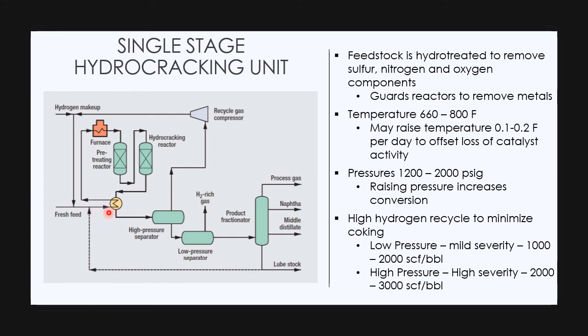Now let's look at the process flow sheet. The fresh feed is coming, it goes towards the furnace, then the pre-treating reactor, and there is our hydrocracking reactor. After that it goes to a separator, then the recycled stream comes back and mixes with the feed and the process goes on. We get naphtha, metal distillate and process gas.